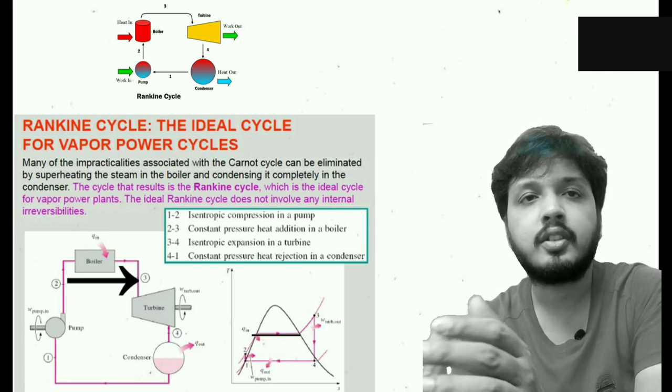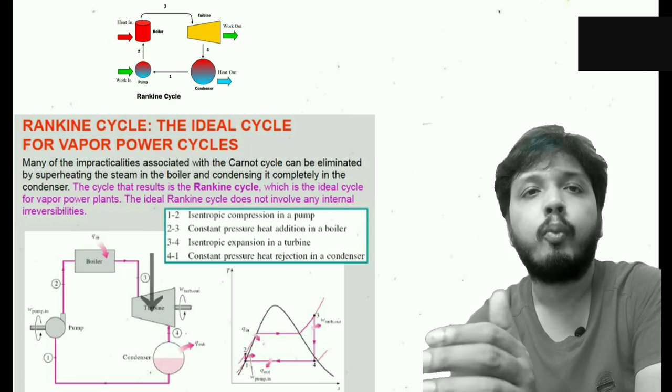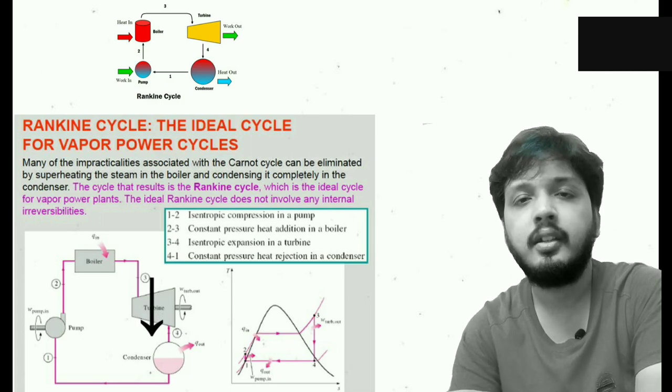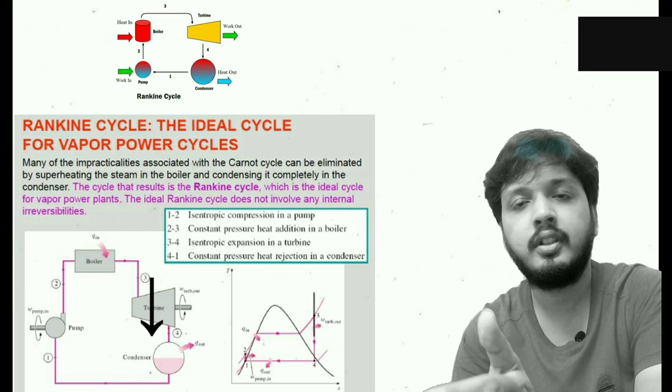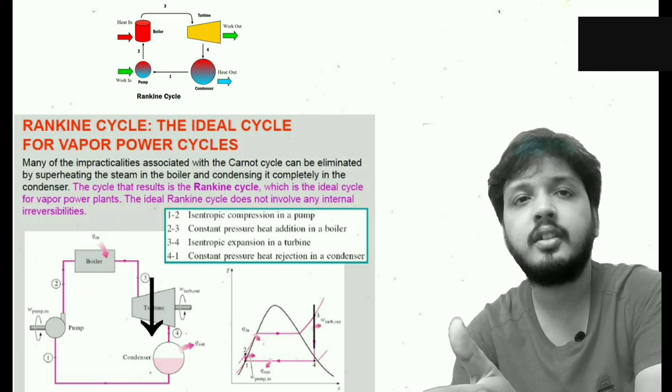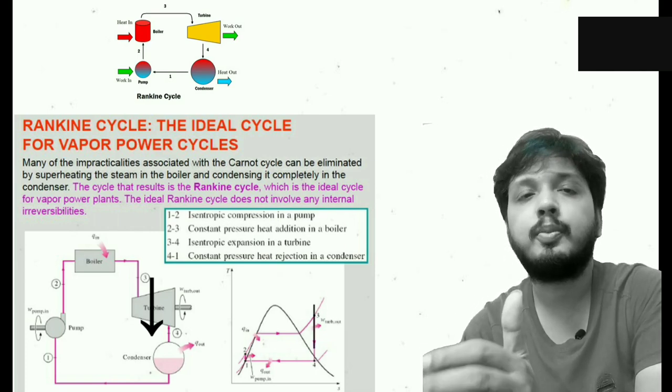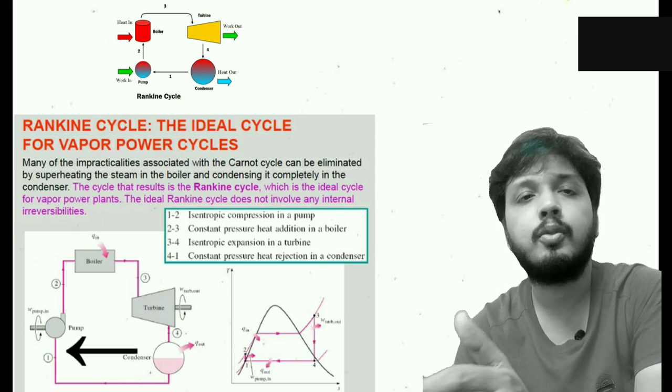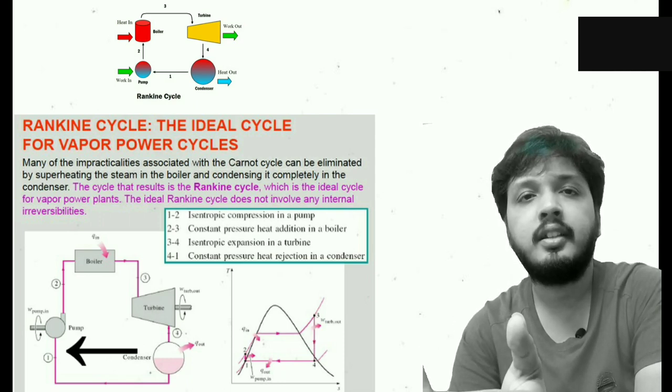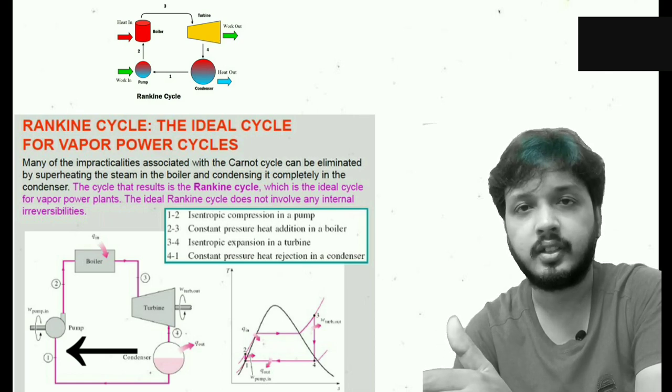In case of 3 to 4, water is expanding in turbine and the graph again becomes parallel to T axis. So entropy is constant. This is called isentropic expansion in turbine. And in the case of 4 to 1, heat is rejected in the condenser. So this is called constant pressure heat rejection in the condenser.